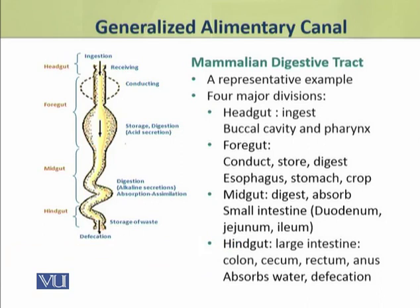The mammalian digestive tract has four major divisions. The first division is called the head gut, which is specialized for the intake or ingestion of food. It comprises the buccal cavity and pharynx.